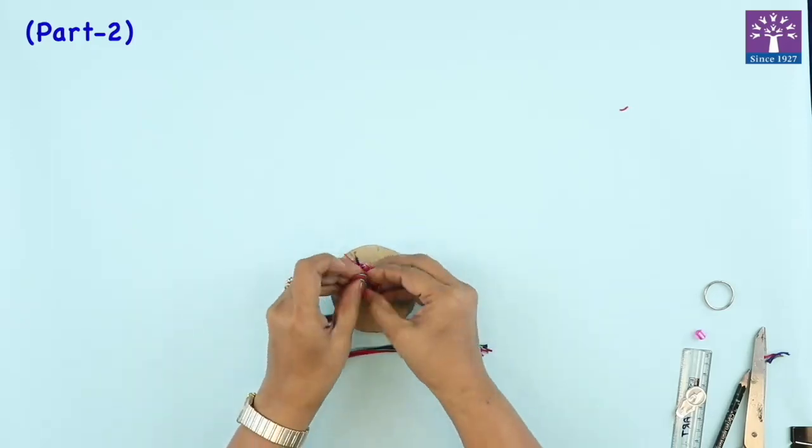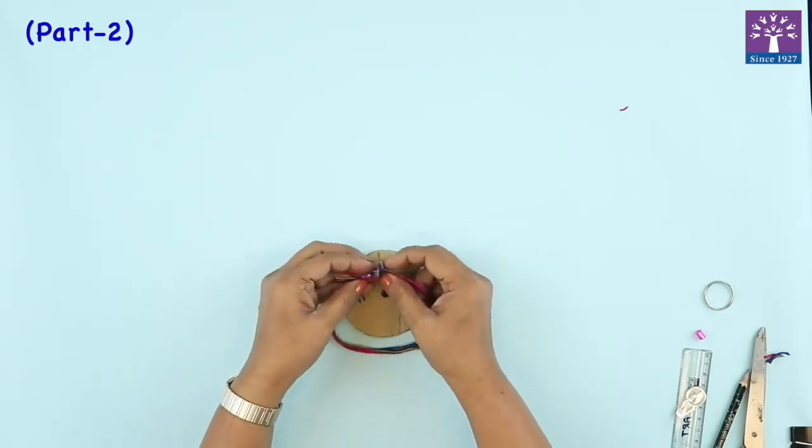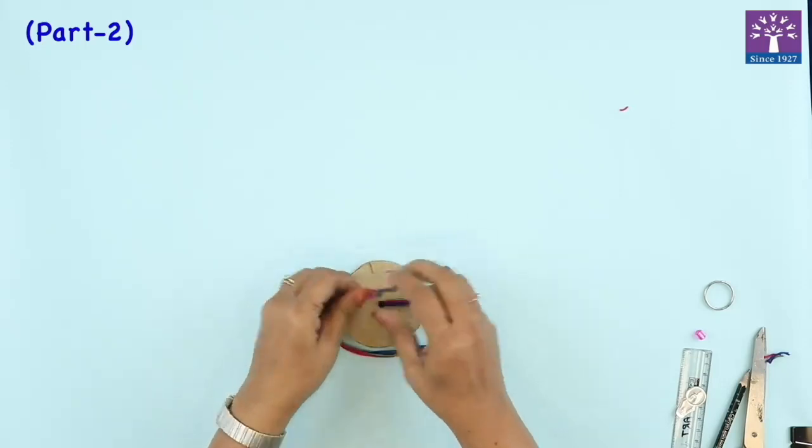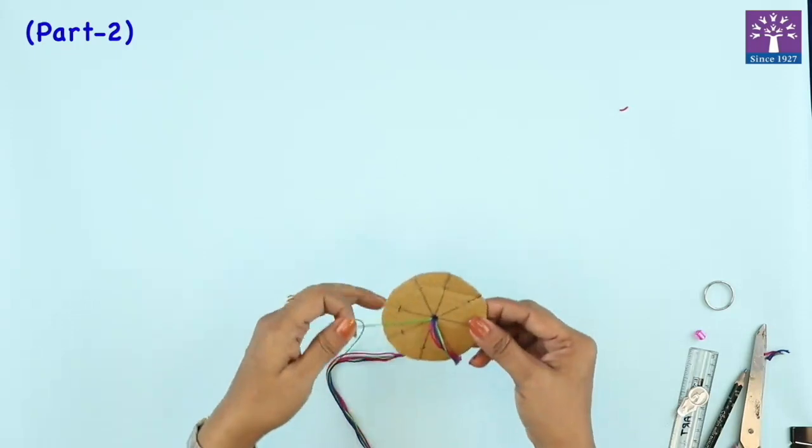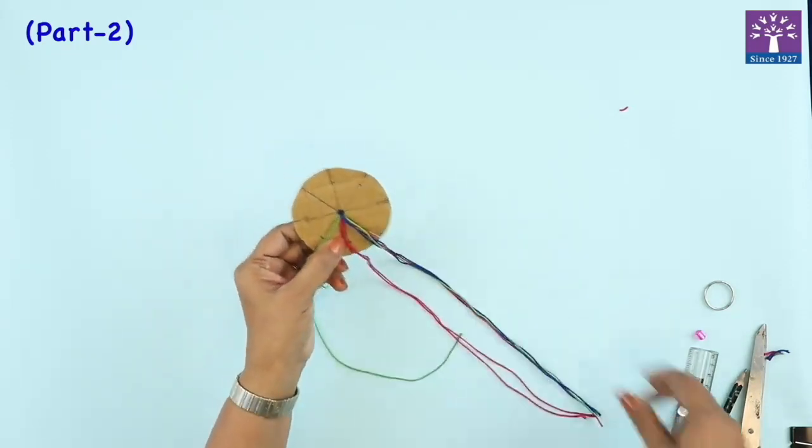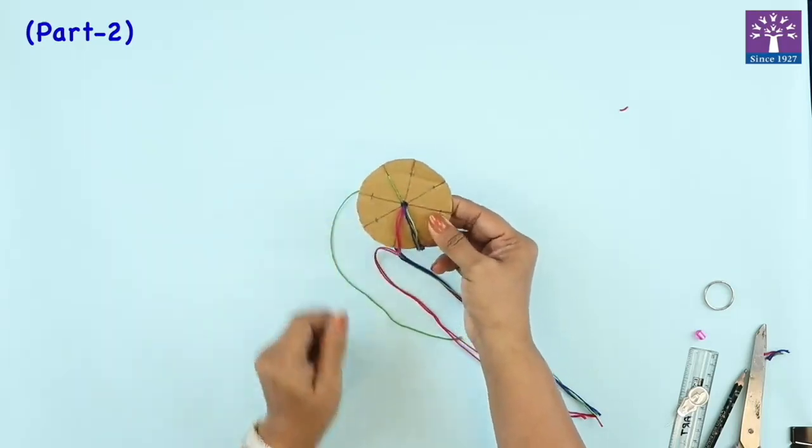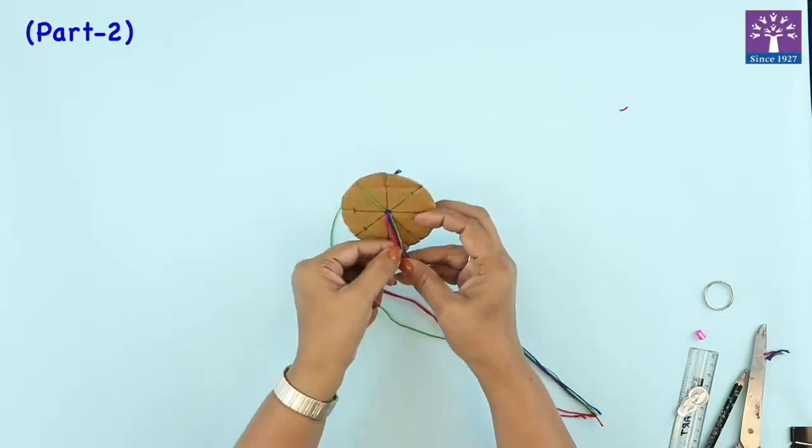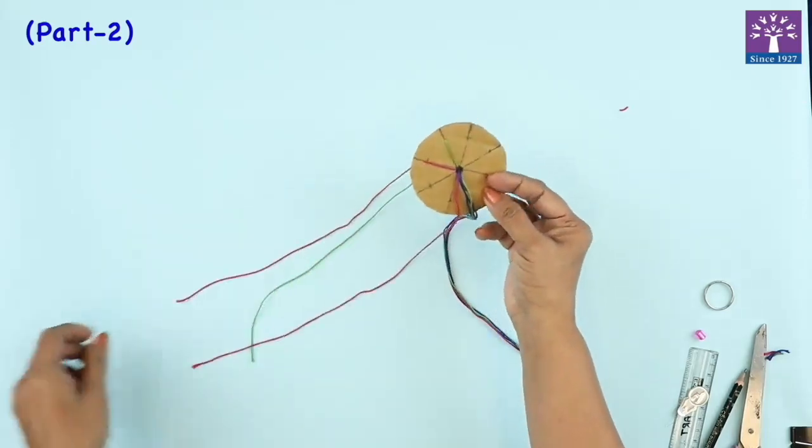I'll quickly put one more knot so that I have a thick knot. I'm separating the strings and I'm tucking each string in the slit that we have cut. We have 8 slits but we have 7 strands of thread.